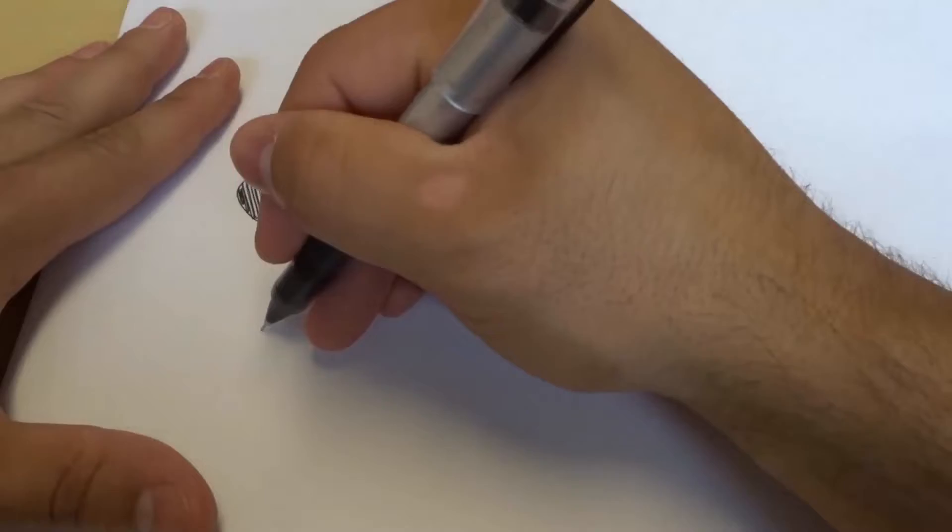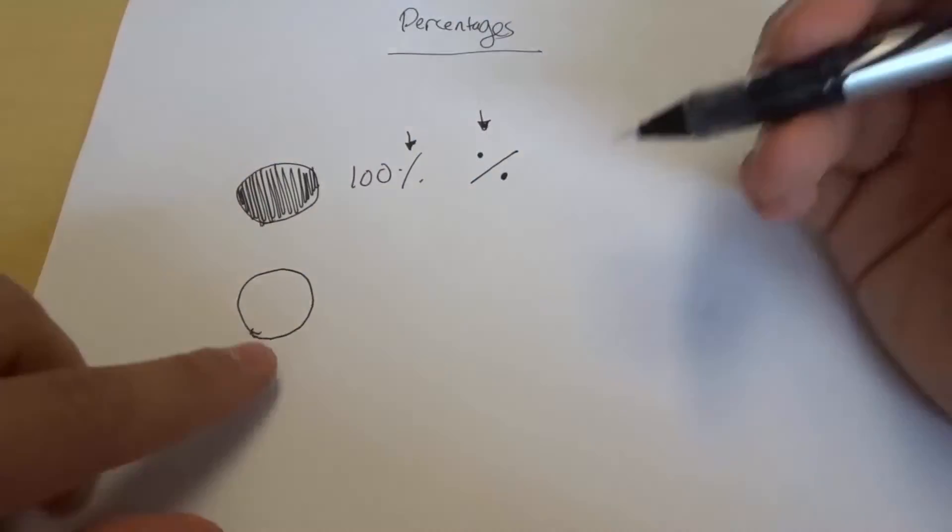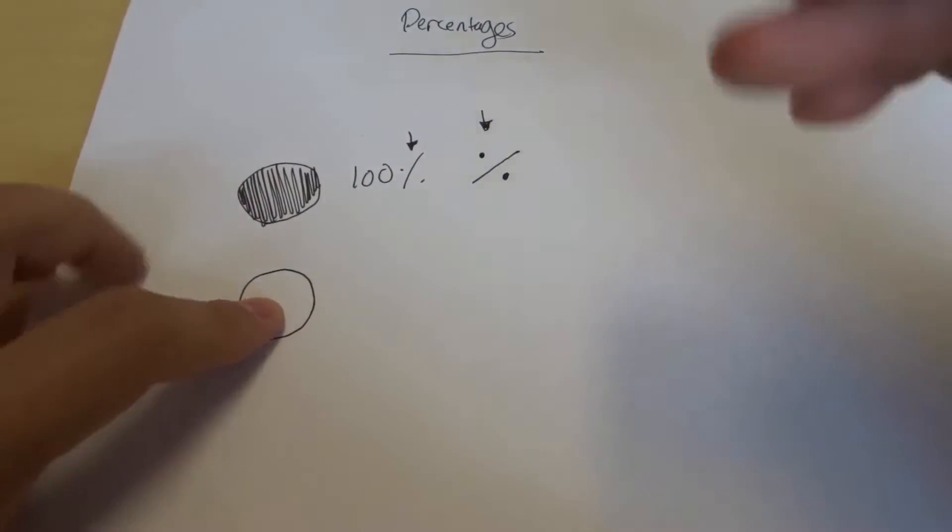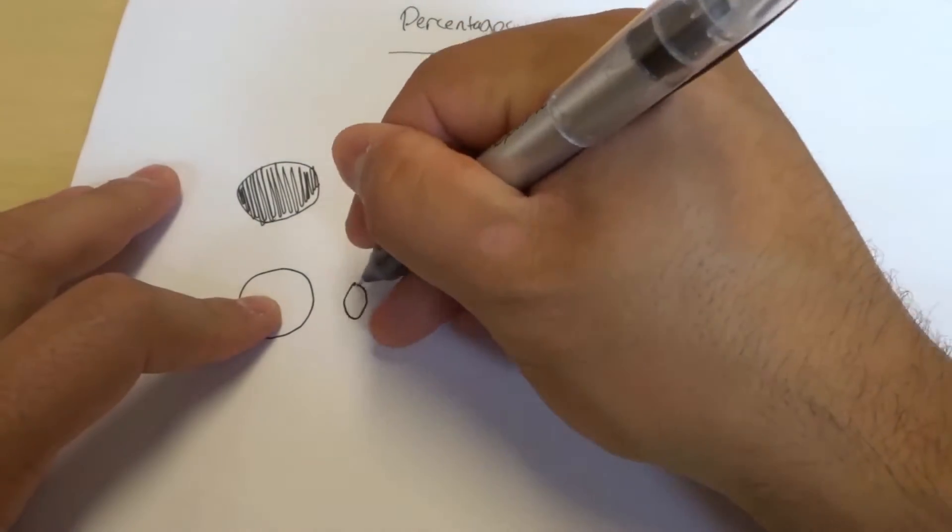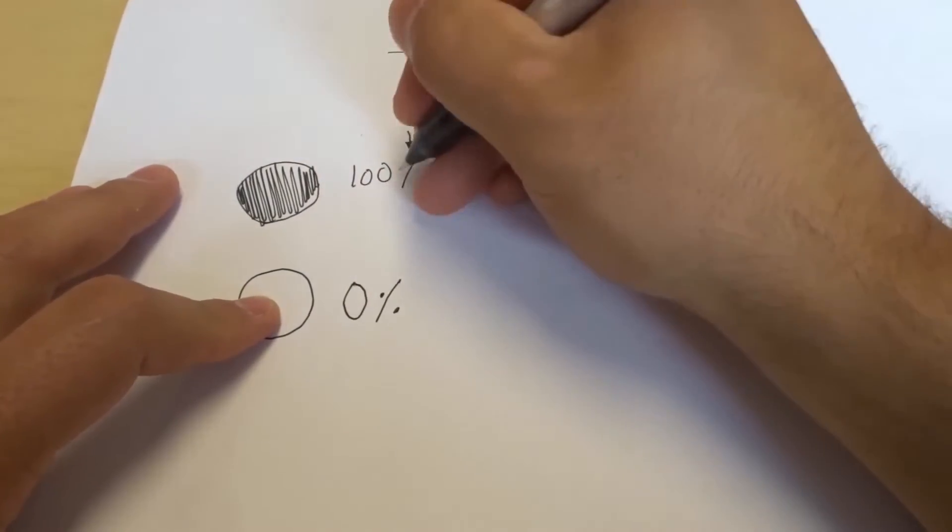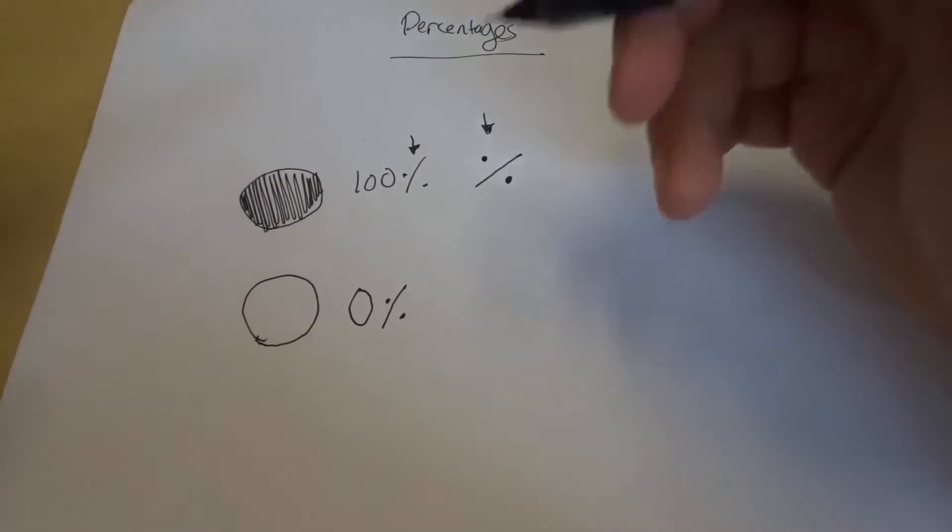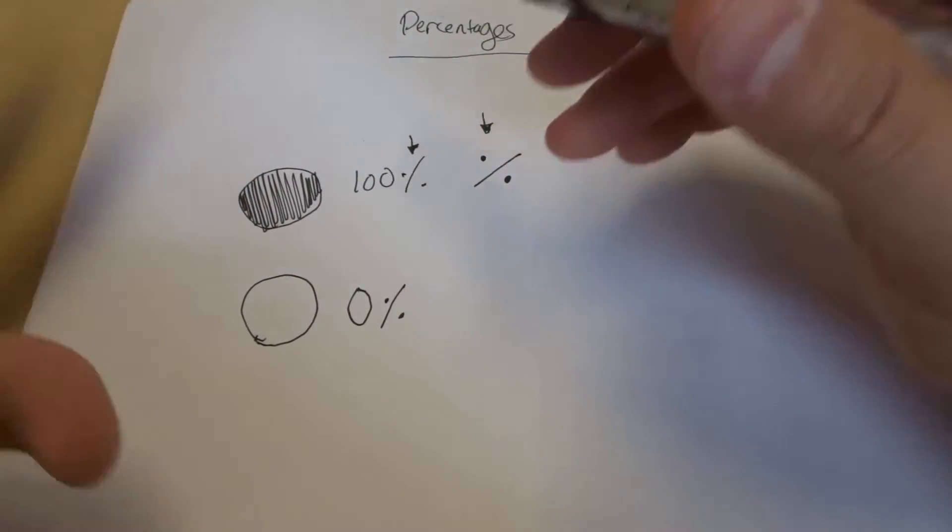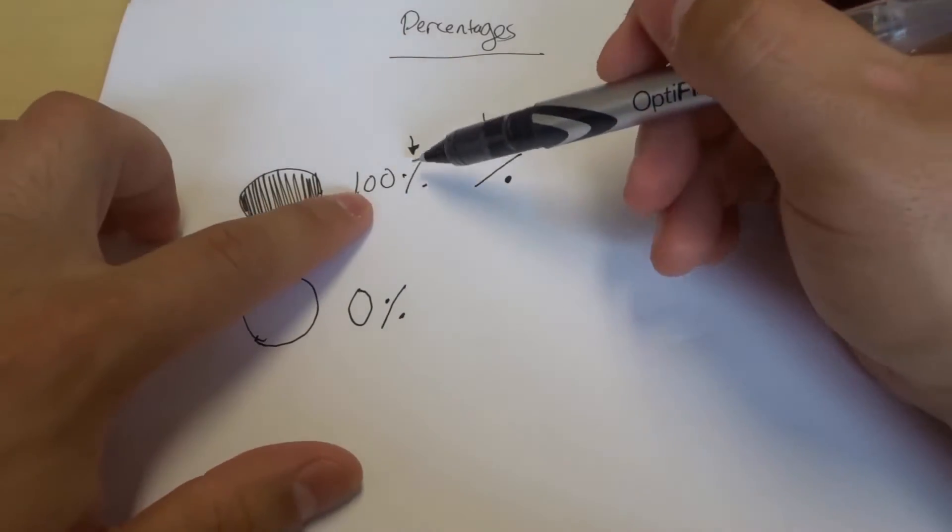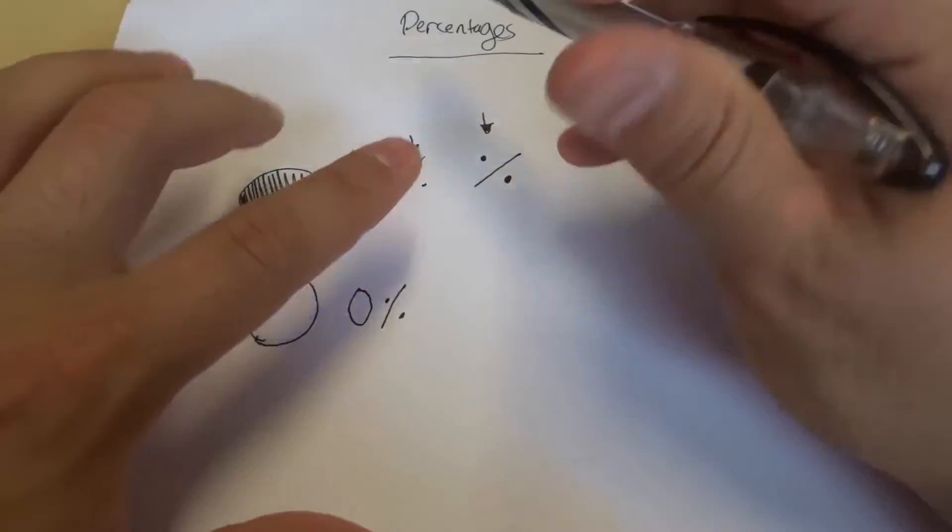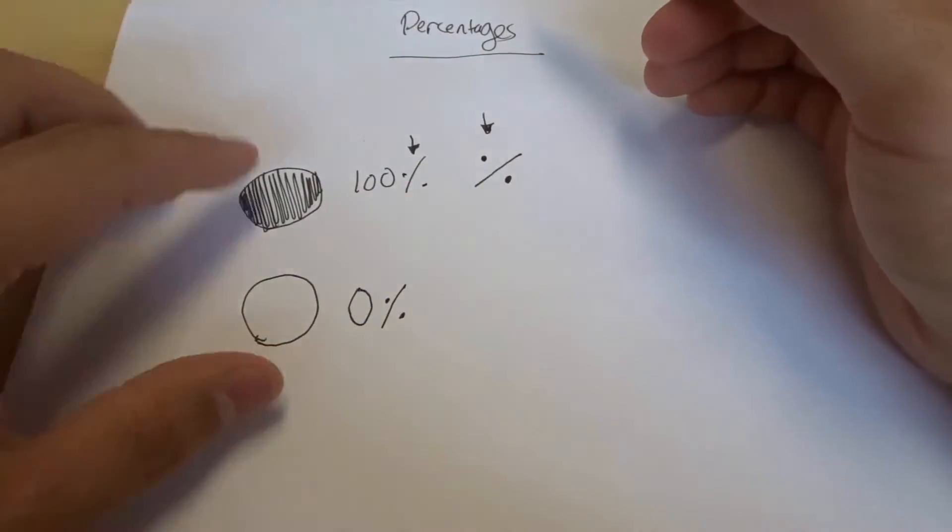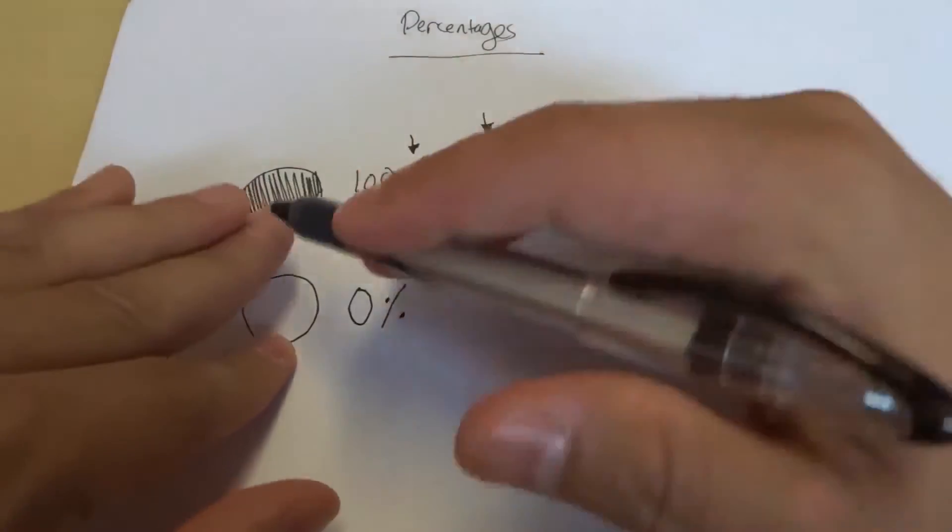Now let's say we have a pie and we don't have any of this pie. It's blank right now. We would actually have 0% of the pie. So a percent is basically a value that means what part of the whole. Right now we have the whole pie, which is 100%, which means the entire thing. And right here we have 0%, which means nothing.